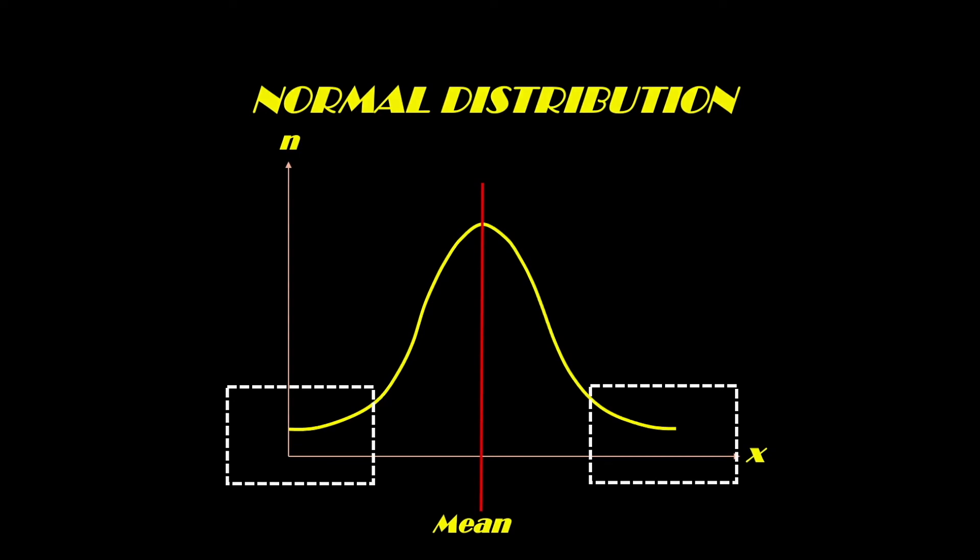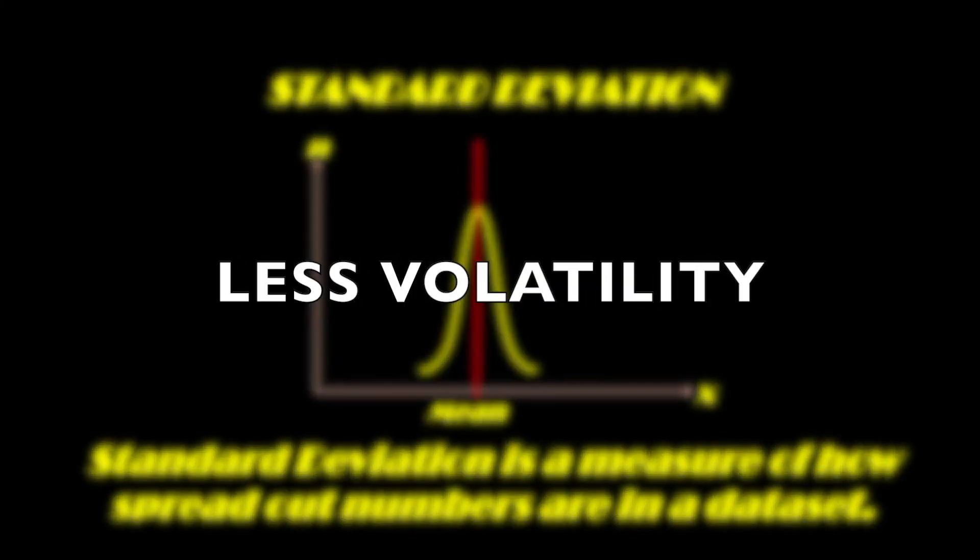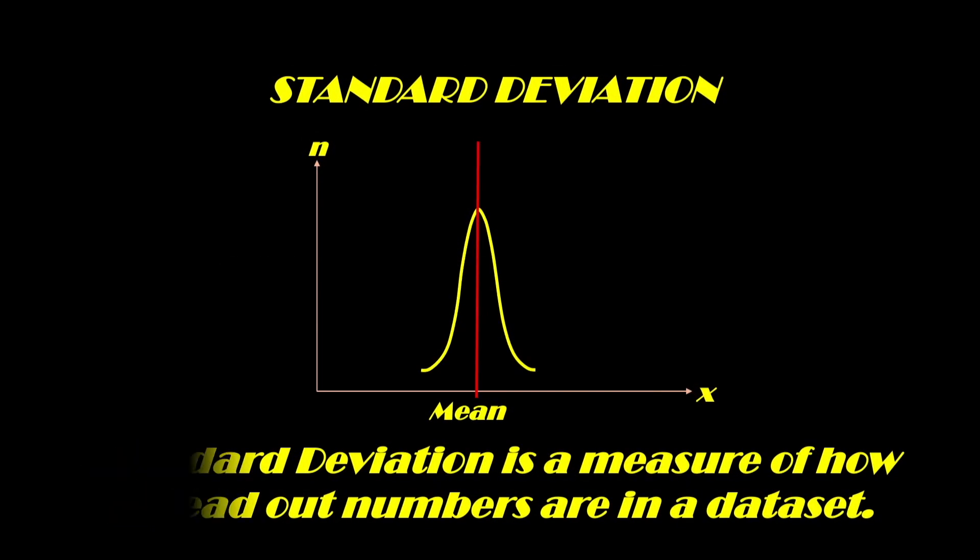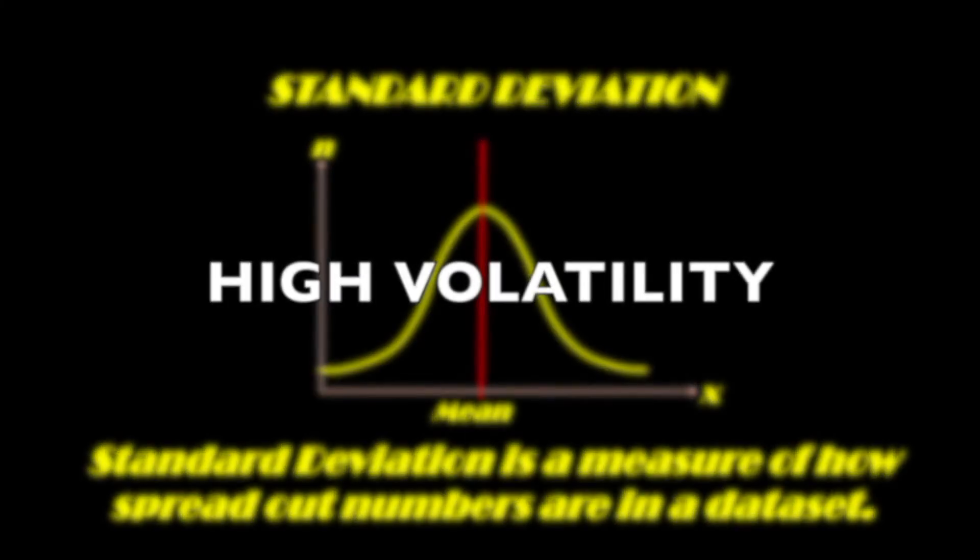When the price is spread widely around the average, it's said to demonstrate high volatility, whereas when the price is stacked closer to the mean, it's said to demonstrate low volatility because it means that the price is moving more or less around the average.